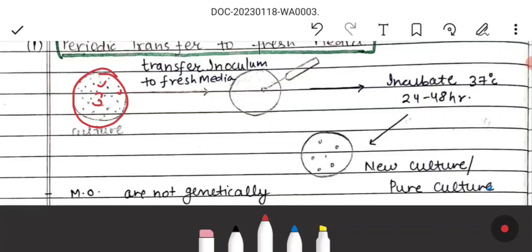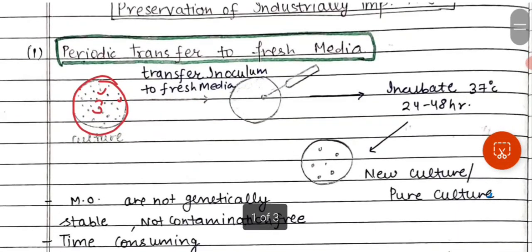The microorganism in the culture utilizes the media. During the exponential phase, the population will double and the microorganism grows and divides at a maximum rate, while the culture media starts to be utilized. In the stationary phase, the number of living cells equals the number of dying cells. As the culture media becomes exhausted and nutrients are reduced, there is accumulation of toxic waste products in the media, which causes the microorganism to die.